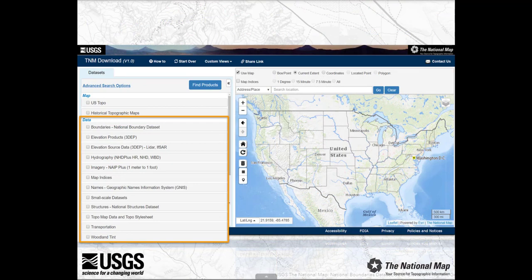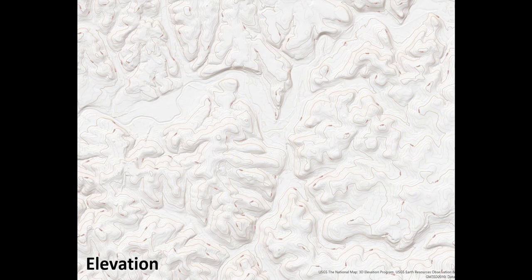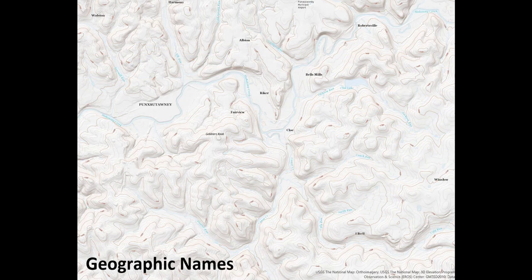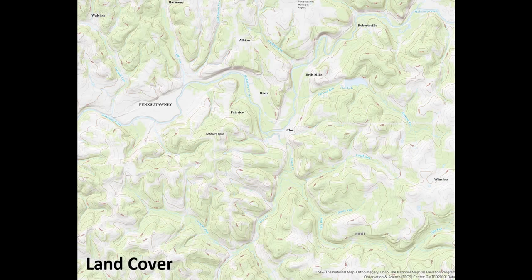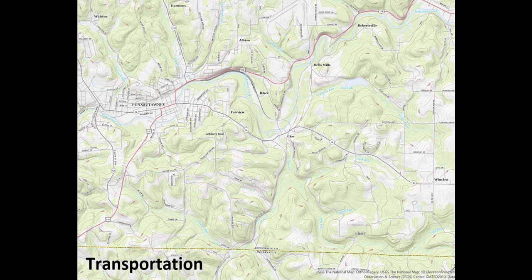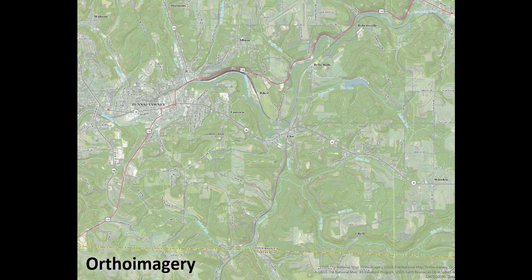The geographic information available from the National Map includes elevation, hydrography, geography, geographic names, land cover, boundaries, transportation, structures, and ortho imagery or aerial photos.